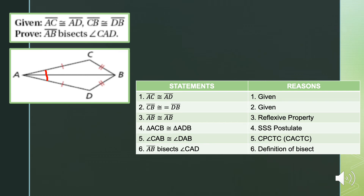Here is the formal proof. Statement one: line segment AC is congruent to line segment AD — given. Statement two: line segment CB is congruent to line segment DB — given. Statement three: line segment AB is congruent to line segment AB by reflexive property. Statement four: triangle CAB is congruent to triangle DAB by the SSS postulate. By CPCTC, angle CAB is congruent to angle DAB. And finally, line segment AB bisects angle CAD by the definition of bisect. QED.